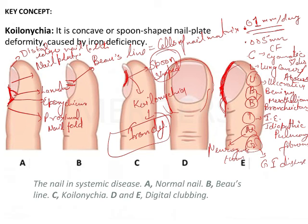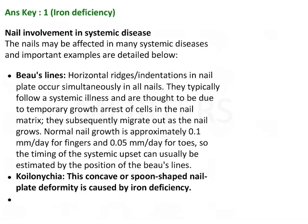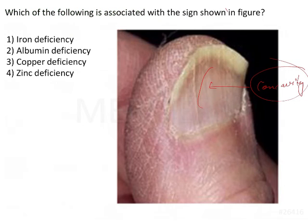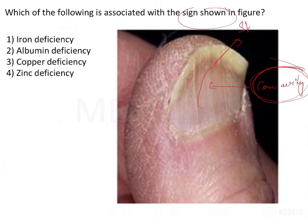So these are the various causes of clubbing. Going back to the question — which of the following is associated with the sign shown? The sign is showing concavity and the nails are spoon-shaped, meaning koilonychia is present. This is generally seen in iron deficiency, as already discussed.